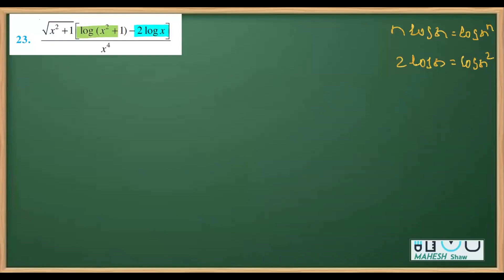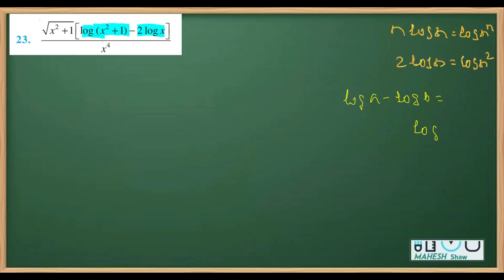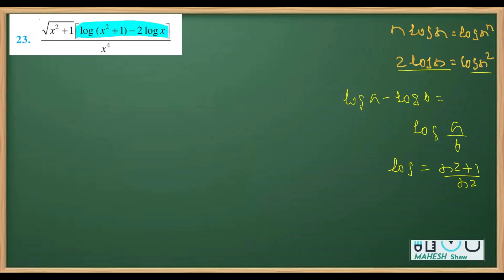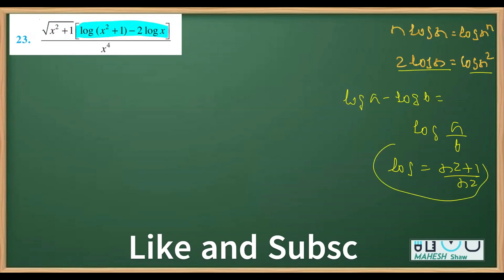The second property is log(a) minus log(b) equals log(a/b). So log(a) minus log(b) gives us log(a over b). Here, 'a' is x² + 1 and 'b' is the term we obtained. So I can directly write the combined expression as a single logarithm after applying these two properties.